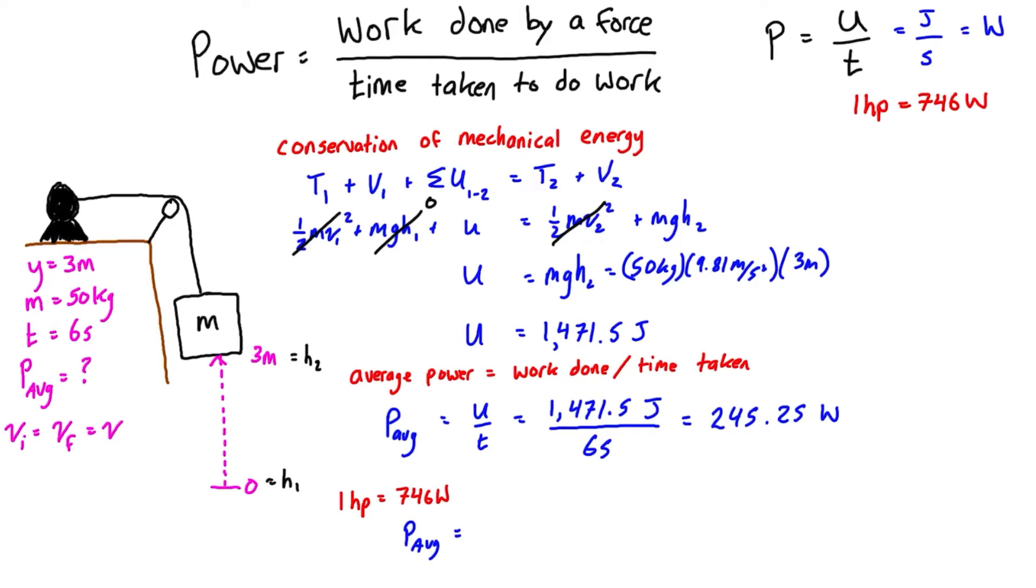We have P average is equal to 245.25 watts times the ratio of one horsepower for 746 watts. The watts cancel out and that leaves us with horsepower, which is 0.33 horsepower.